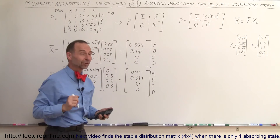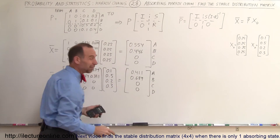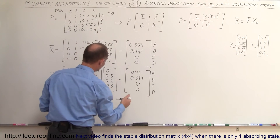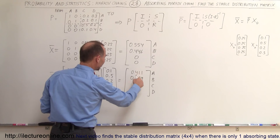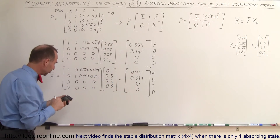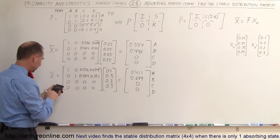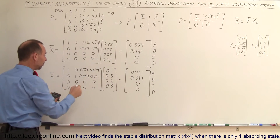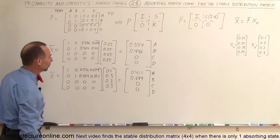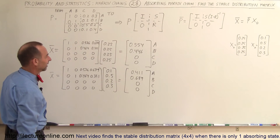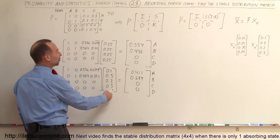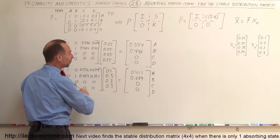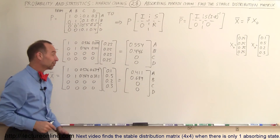That can't be correct because A and B should add up to one — 0.411 plus 0.689 is more than one, so a mistake was made somewhere. That's always a good check: if it doesn't add up to one, something is wrong. Looking back, the initial distribution 0.1, 0.5, 0.2, 0.3 adds up to 1.1, not 1.0 — that's the error.